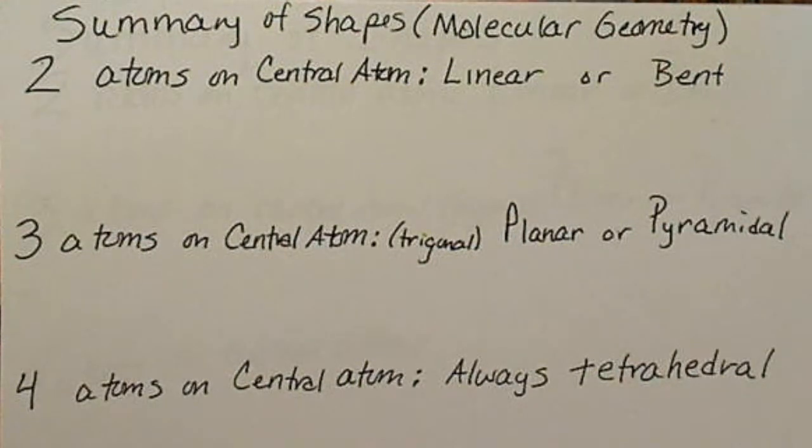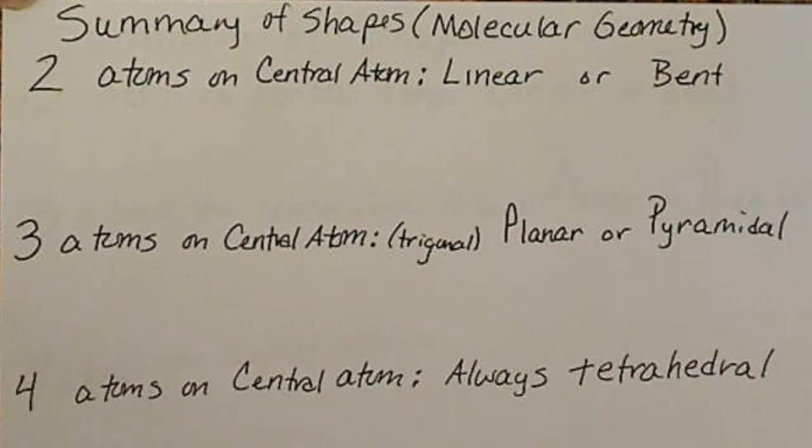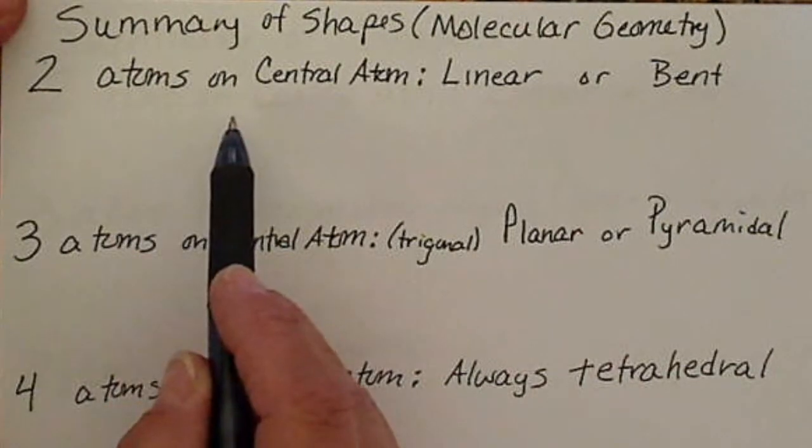The shapes of molecules depend on how many electron groups there are around the central atom. We are only going to consider how many atoms there are around a central atom and then if the central atom has lone pairs or not. That is basically the cause of the different shapes.